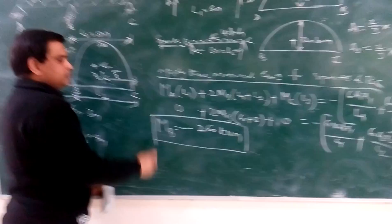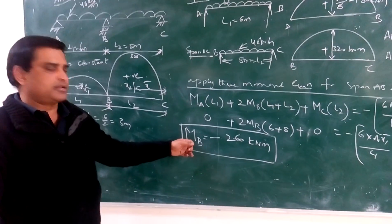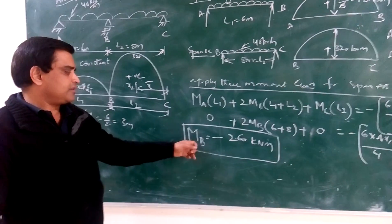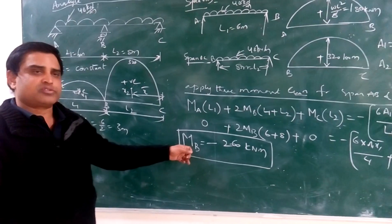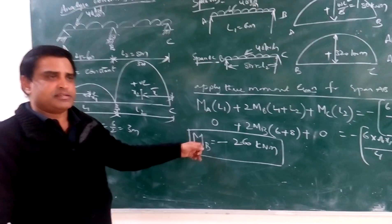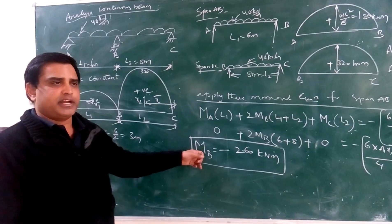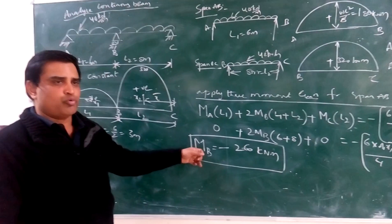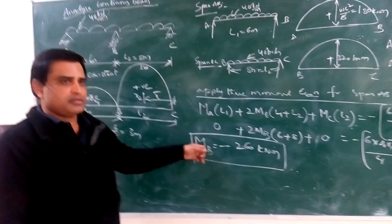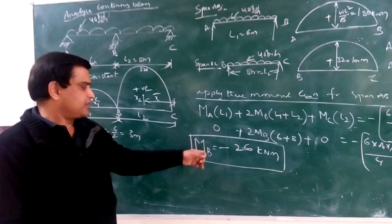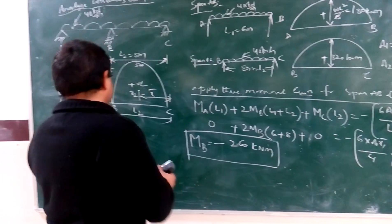This is the fixed-end bending moment. This moment is defined as the bending moment when both ends of the beam are fixed. When both ends of the beam are fixed, the reaction moments developed are called fixed-end bending moments.